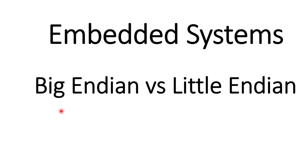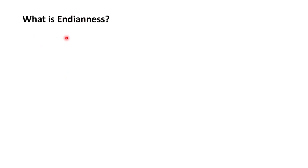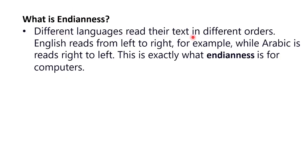Using Big Endian, how are we going to store 4 bytes of data into memory, and similarly using Little Endian — that is what we are going to discuss today. First, what is endianness? Different languages read text in different orders. English reads from left to right, while Arabic reads right to left. This is exactly what endianness is for computers.